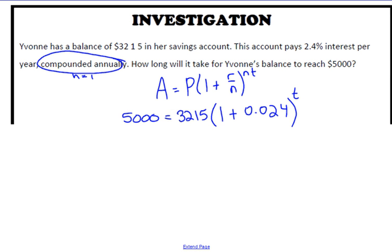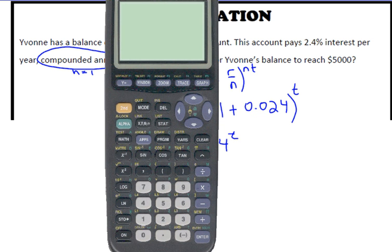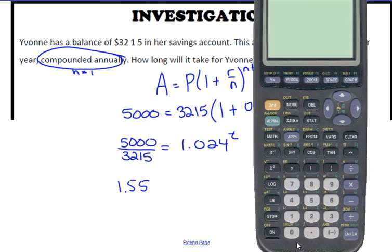First step: if we're solving for an exponent, we want to get the base by itself. How do we move 3,215? Divide both sides by it. So 5,000 divided by 3,215 equals 1.024 to the power of t.